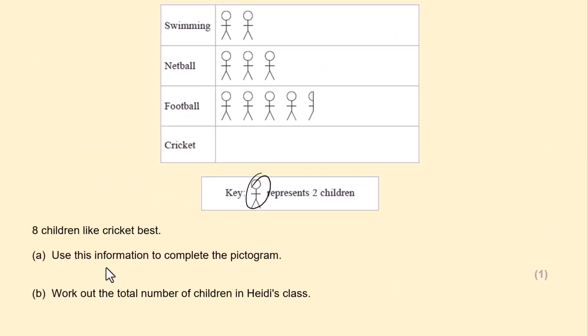One of these stickmen represents 2 children. 8 children like cricket best. Use the information to complete the pictogram. So if one of them presents 2, 8 will be 4 of them. We're not very good at art. But I wouldn't say you spend too much time making your stickman fancy. Sometimes I prefer to do some smiley faces. If you can see them. A bit of hair.